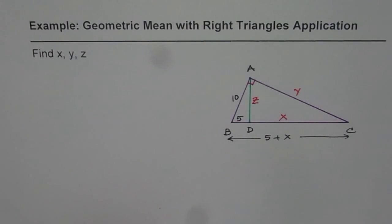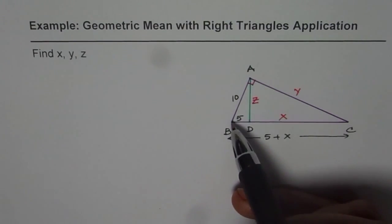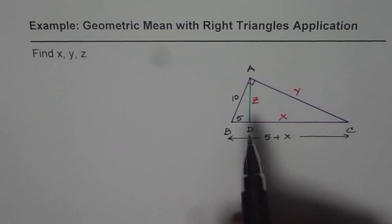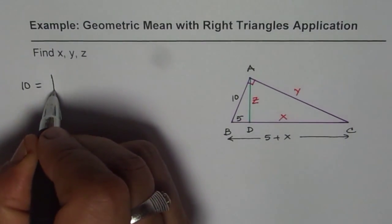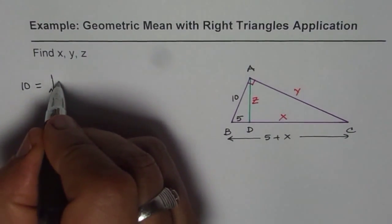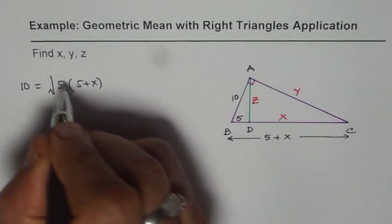Let's begin with the right triangle geometric mean leg theorem which says that the side length of the leg is the geometric mean of the hypotenuse and the adjacent sides. So that is to say that 10 equals square root of 5 times the hypotenuse which is 5 plus x.